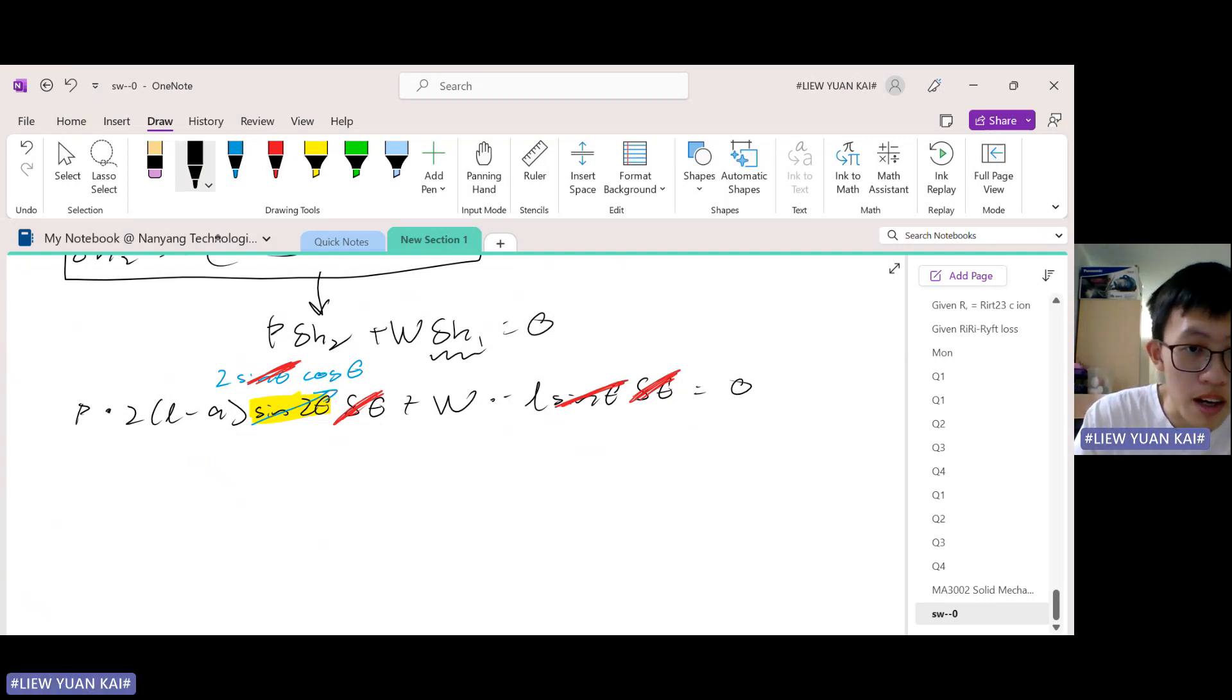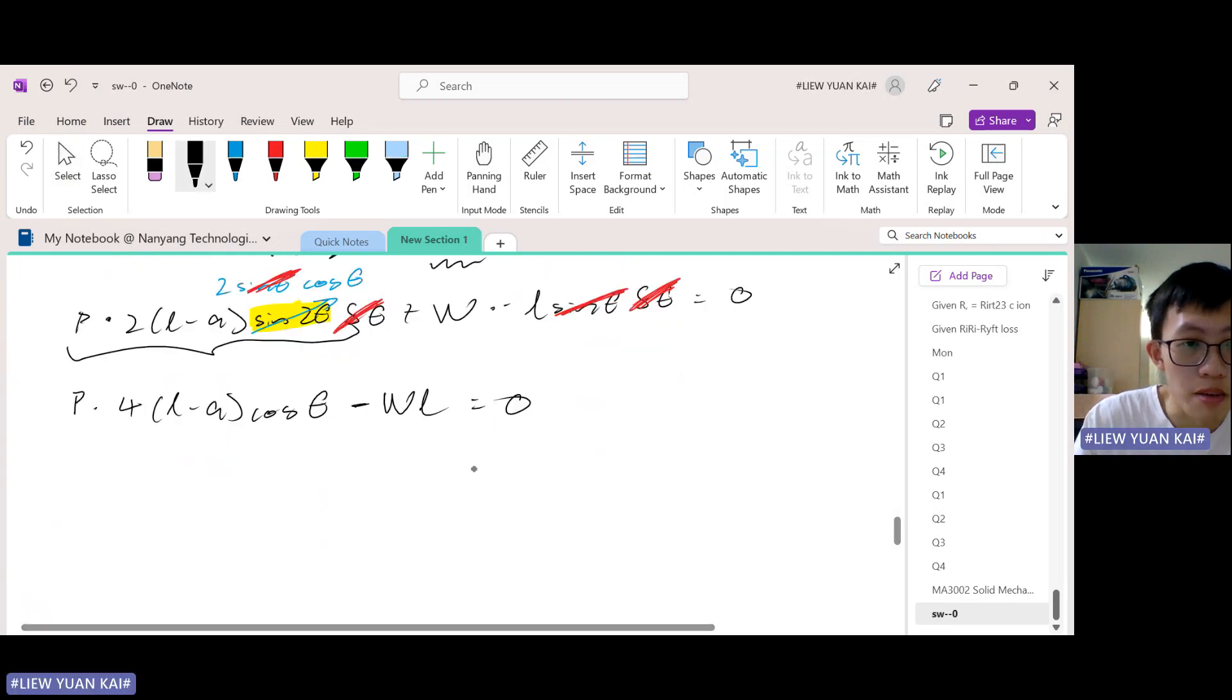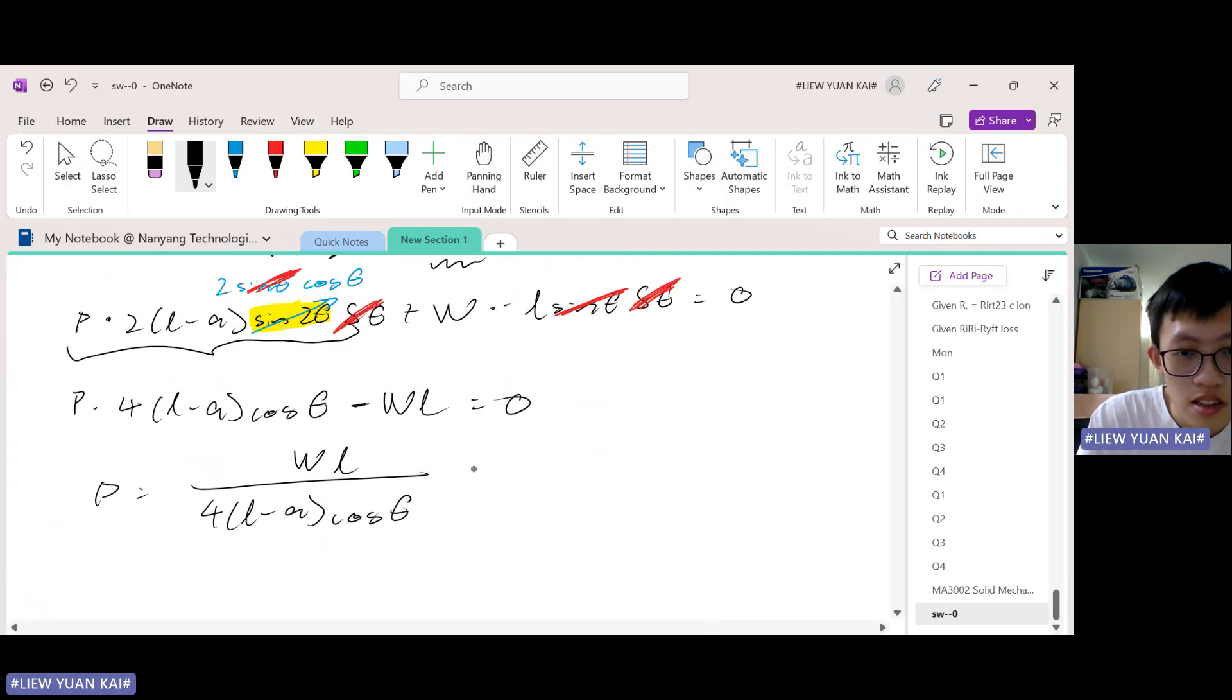So if I simplify this side, I shall get P times 4(L minus A) cosine theta, and this becomes minus WL equals zero. So if I make P the subject, I shall get WL / [4(L minus A) cosine theta].